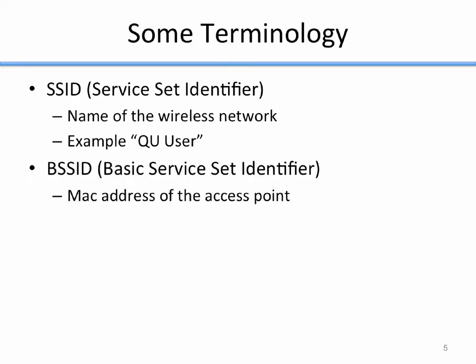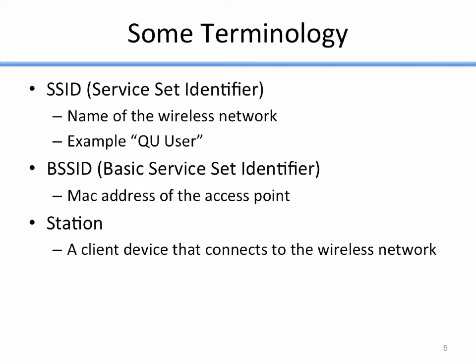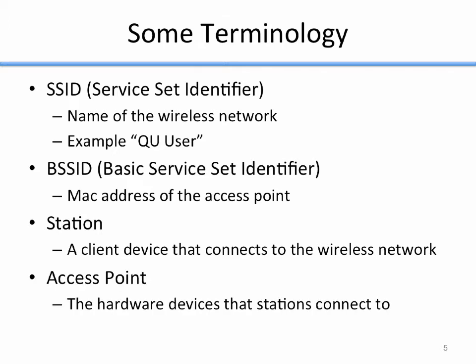Another term is BSSID — Basic Service Set Identifier — which sounds complicated but is really just the MAC address of the access point you're connecting to. Another piece of terminology is a station: a client device that connects to the wireless network, like your laptop or phone. Any device that connects to the 802.11 network is called a station. An access point is the hardware device that stations connect to — your wireless router, for example.